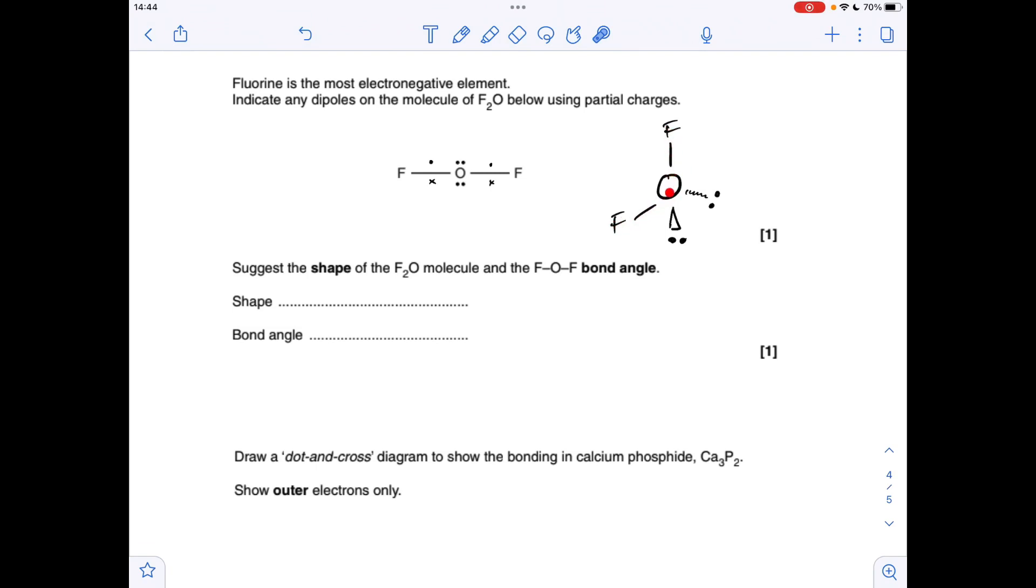So in terms of the bond angle, we've got 4 electron regions, so our starting angle would be 109.5 degrees, but we've got to take 2.5 degrees off for each of those lone pairs. So because of that, the angle's 104.5 degrees.